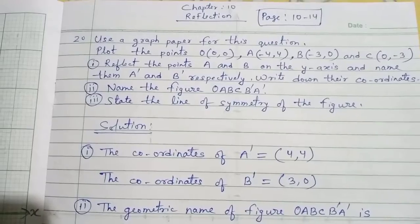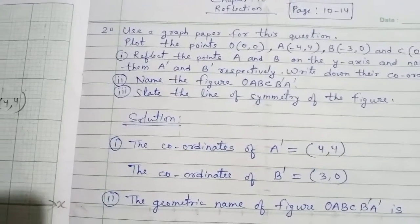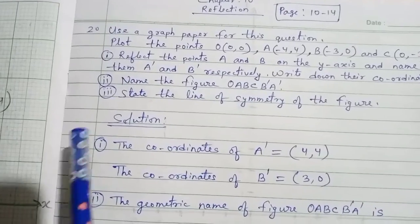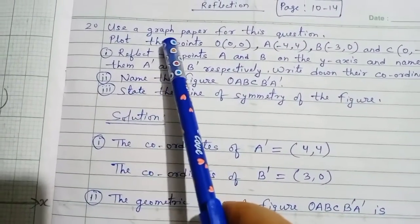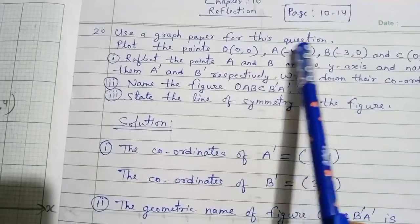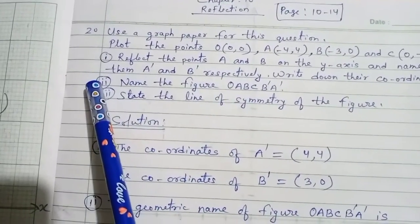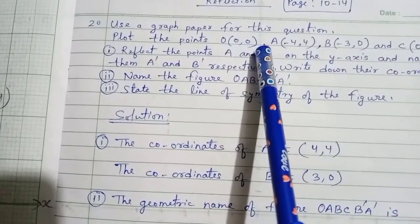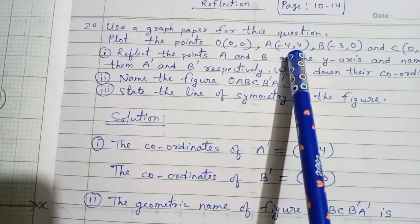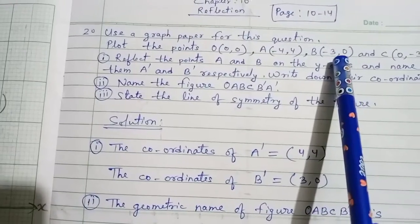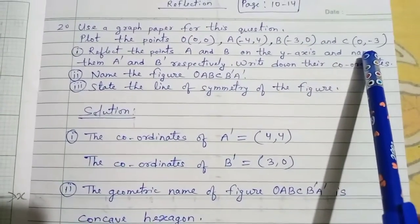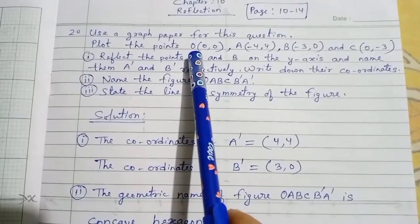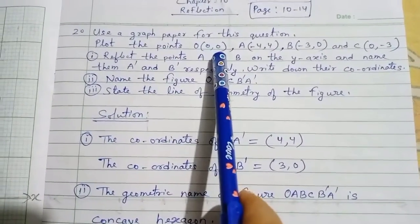Hello class 10 children, welcome to this online class. Let me do a new question from the chapter on reflection. We have to use a graph paper for this question. Plot the points O(0,0), A(-4,4), B(-3,0), and C(0,-3).